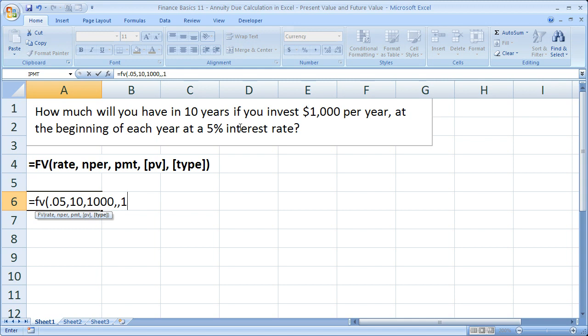By putting a one here, you tell the function that it's going to be an annuity due. So the payment will be at the beginning of the period, or here, the beginning of the year.